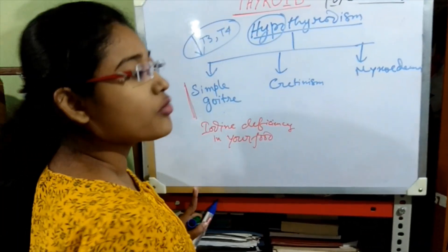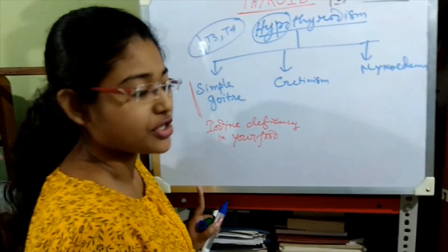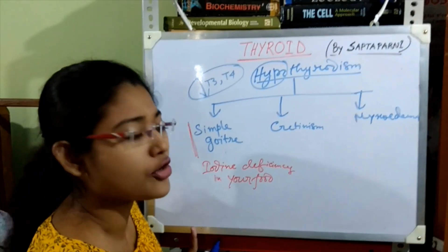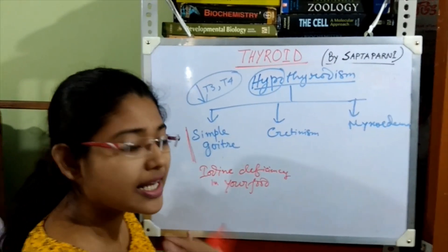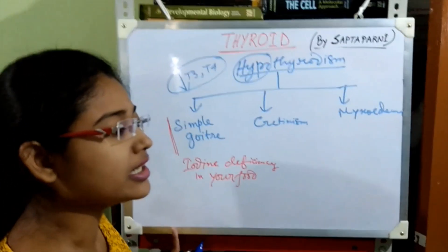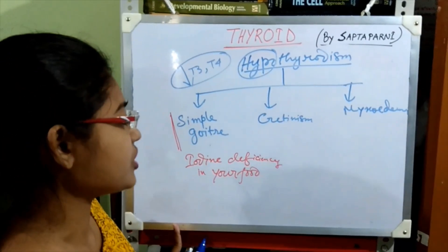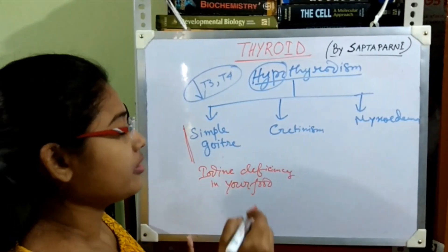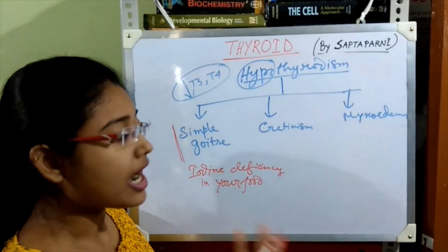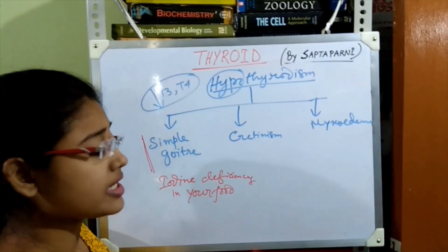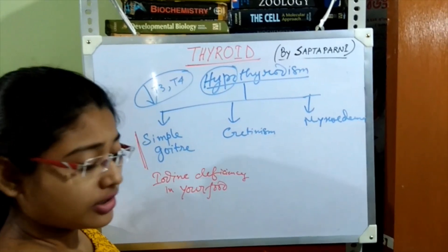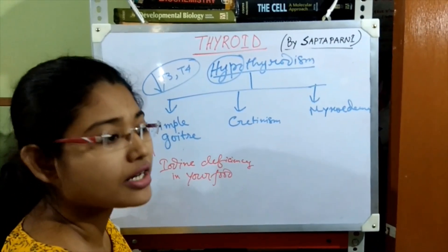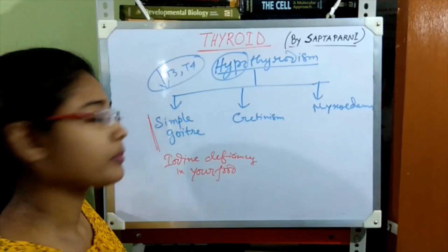In hilly regions, the soil contains very less iodine, so the food also contains less iodine. As a result, persons living in hilly regions suffer from simple goiter because the iodine content in their blood is very low and their thyroid gland cannot produce the required amount of T3 and T4.